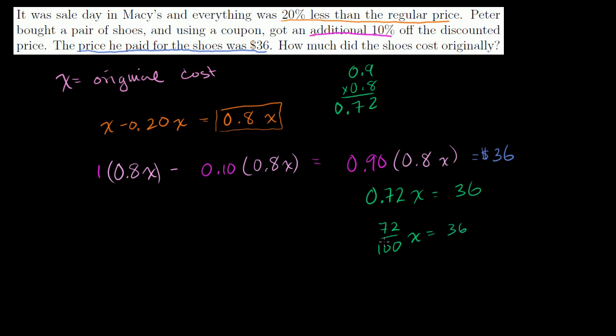Or maybe we could say 72 over 100x is equal to 36. Or we could even say this is the same thing as 36 over 50, right? 36 over 50x is equal to 36. And this isn't even in lowest common forms. This is the same thing as 18 over 25. But I like this number because I have a 36 here.